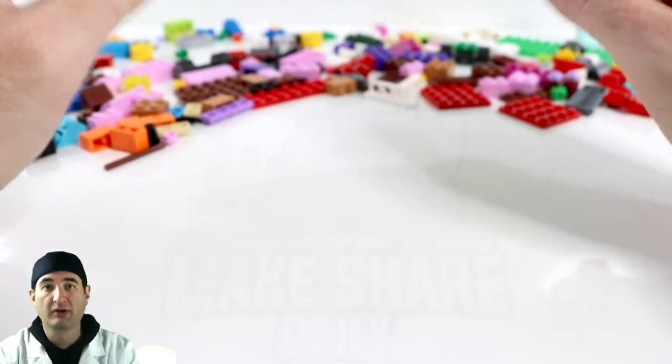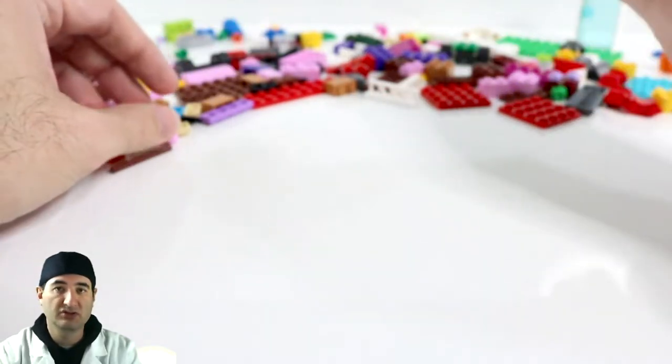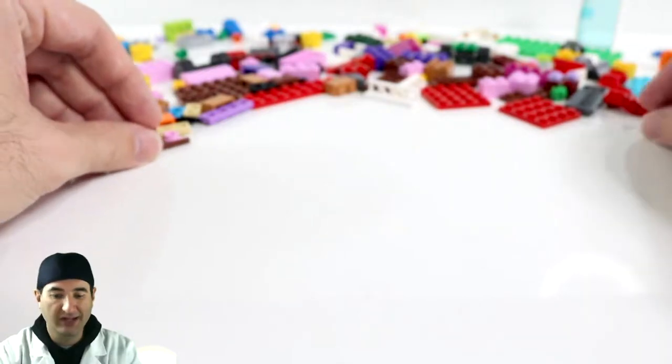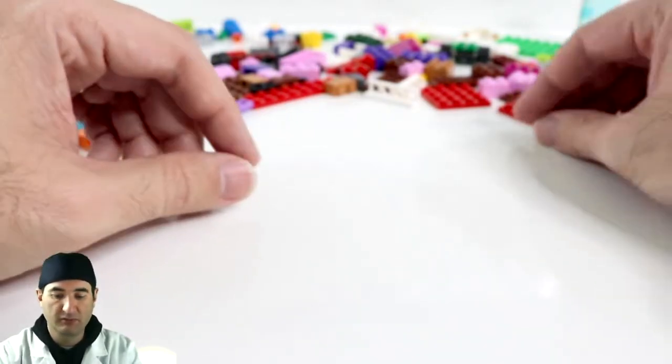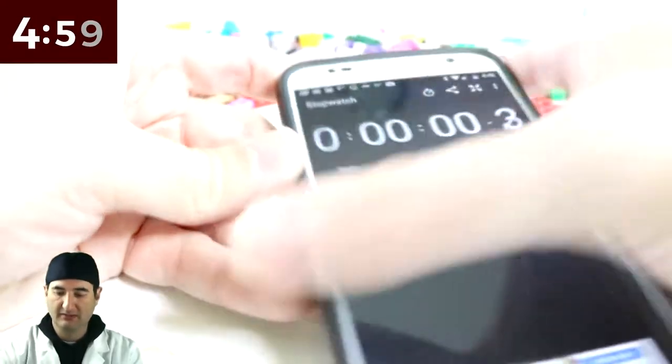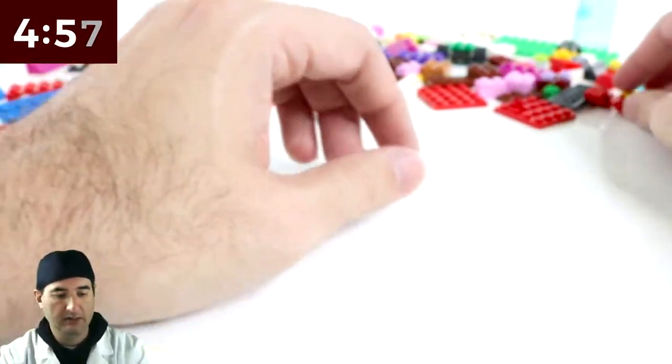So we did a workbench yesterday. We're doing a chair today. Let's see how I'm going to build a chair out of 221 pieces. Let's put five minutes on the clock. Let's get it started and see what we can do.